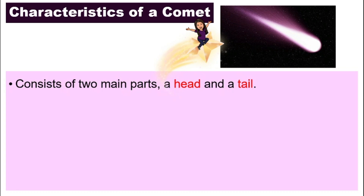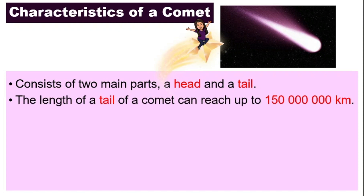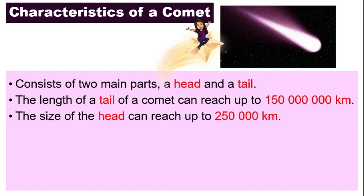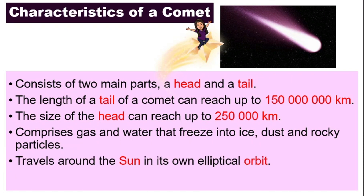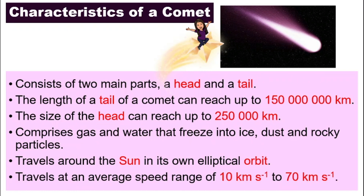From the picture, you can see that a comet has two main parts: a head and a tail, and it can be very long. The tail can reach up to 150 million kilometers, and the size of the head can reach up to 250,000 kilometers — so they are huge. A comet comprises gas and water that freeze into ice, dust, and rocky particles. It travels around the sun in its own orbit, and the shape of that orbit is elliptical. It travels at an average speed of about 10 to 70 kilometers per second, so the speed varies.